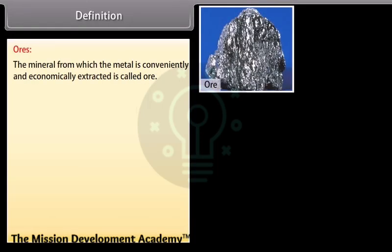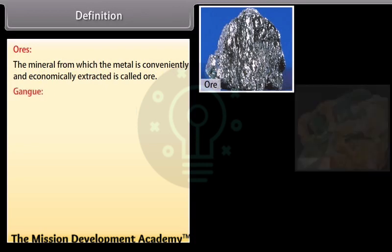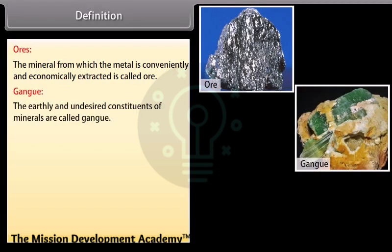Definition. Ores: The mineral from which the metal is conveniently and economically extracted is called ore. Gang: The earthly and undesired constituents of minerals are called gang.